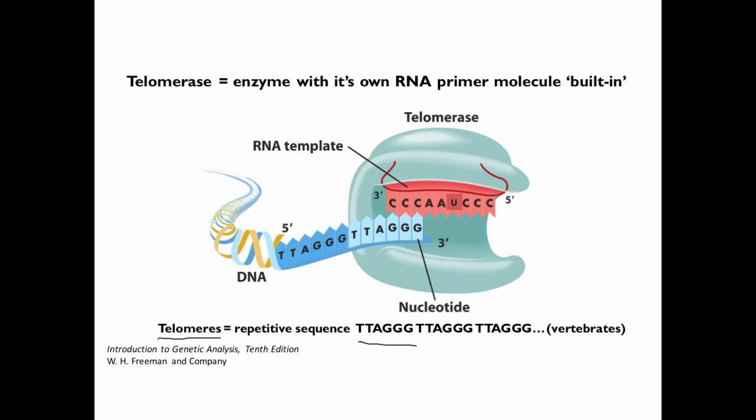And the second component of the protective mechanism against the end replication problem is an enzyme called telomerase. Telomerase is a ribonucleoprotein enzyme where a component of the enzyme is a short RNA molecule that's shown here in red. And the way telomerase works is that that short RNA molecule has a species specific overlapping complementary sequence to the repetitive sequence of the telomere within the given species.